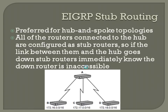EIGRP stub routing is the preferred configuration for hub-and-spoke topologies. Here you've got Router A at your hub and spokes leading to Routers B, C, and D. All the routers connected to the hub are configured as stub routers, so if the link between them and the hub goes down, stub routers immediately know the down router is inaccessible. In another type of network you might have interconnections between B and C, C and D running all over the place. With a stub connection, these routers only have one connection, so you don't have to worry about running the stuck-in-active timer or looking for alternate routes. If they're configured for stub, it just knows that's the only connection and immediately knows it's down and inaccessible.